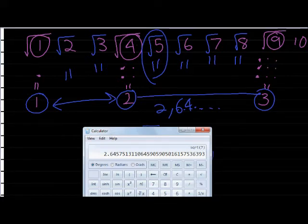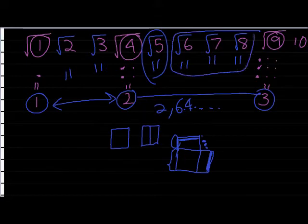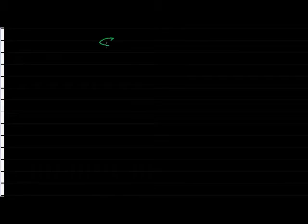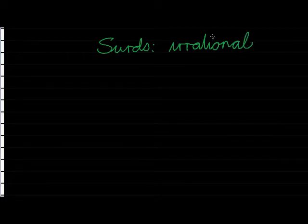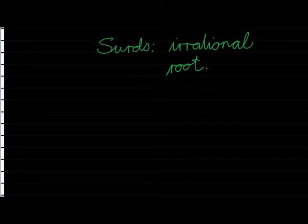Now, these numbers that do not have perfect square answers, perfect answers, are called surds. S-U, let me write it down, surds. They are irrational roots. Irrational roots. When I work out the root of something, it doesn't just have to be a square root. It can also be a cube root. So let's just do a few examples of those.